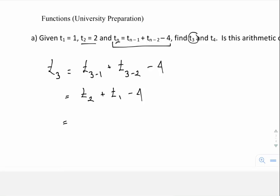Now t2 from definition is 2, t1 from definition is 1 minus 4, and I end up with negative 1. So there's our value for t3.